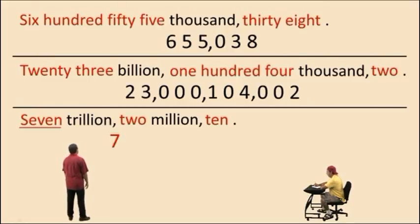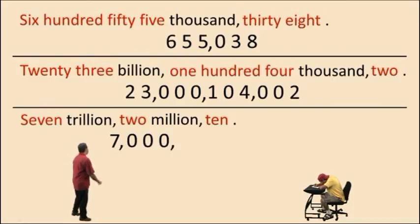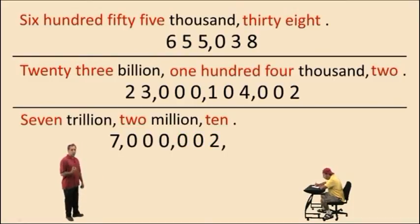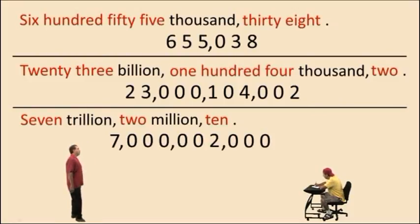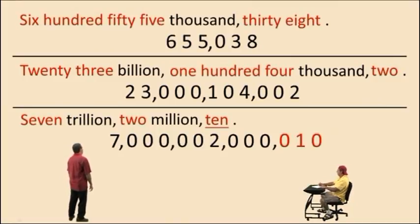Here we have, Charlie, seven trillion. No billions, so we put zeros for that period. We do have two millions, so we put the zero, zero, two in the millions period. We have no thousands. We put the zeros there to represent that period, and we bring it home with a ten. There you go, Charlie, and that completes part two. We'll see you again soon.